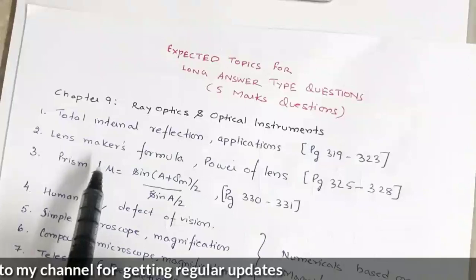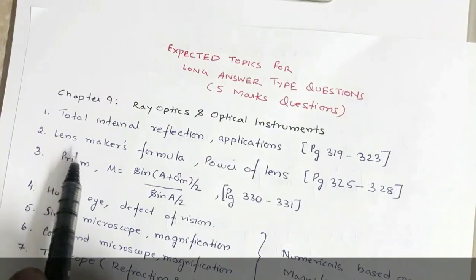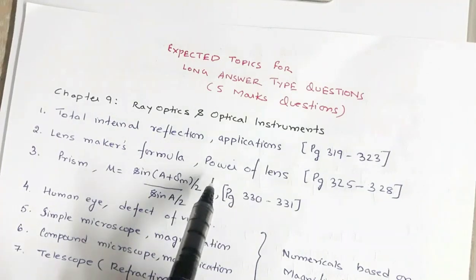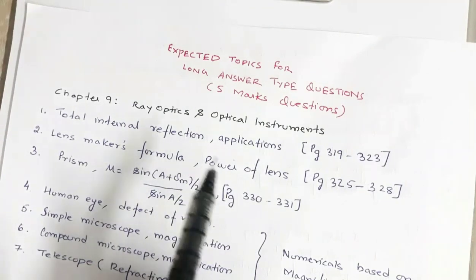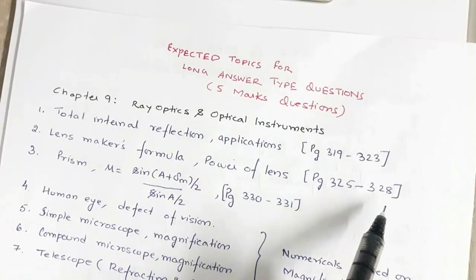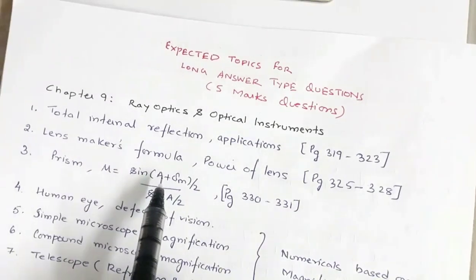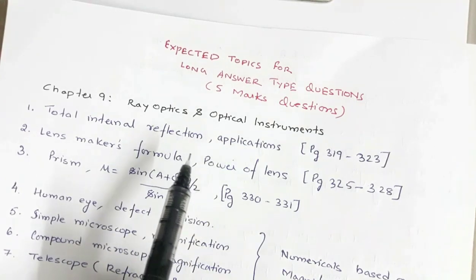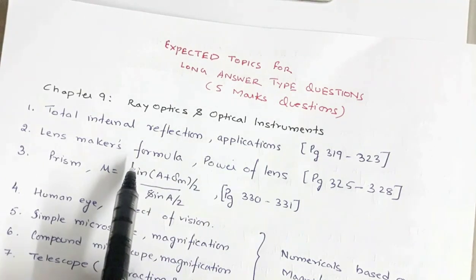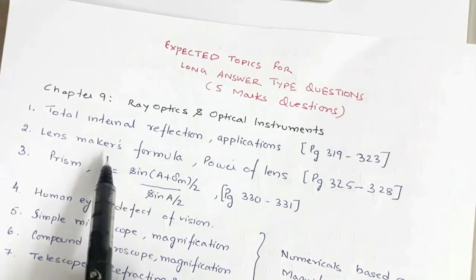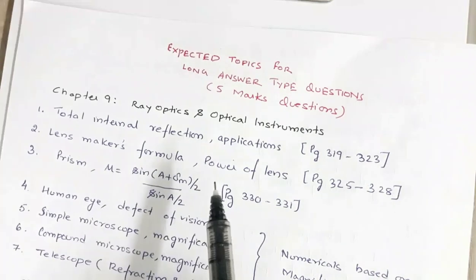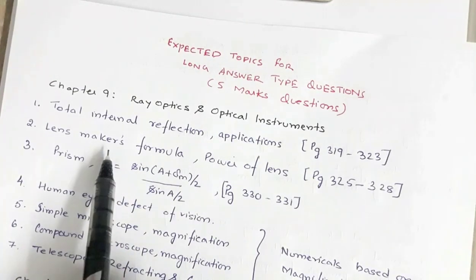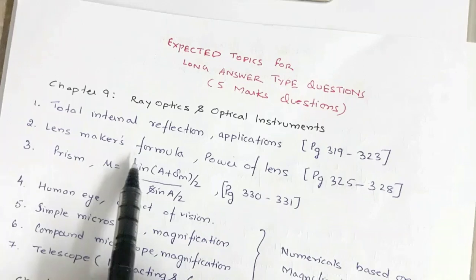There may also be a five mark question based on the lens maker's formula — the derivation of the lens maker's formula, derivation of power of lens, and definition of power of lens. This is given on page numbers 325 and 328. Usually the five marks question is often broken into three plus two: a three marks theory question and a two marks numerical based on the lens maker's formula.